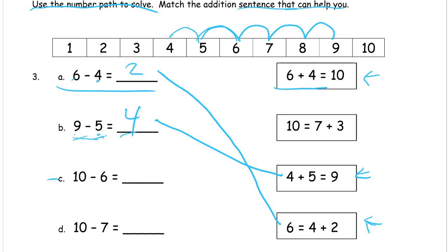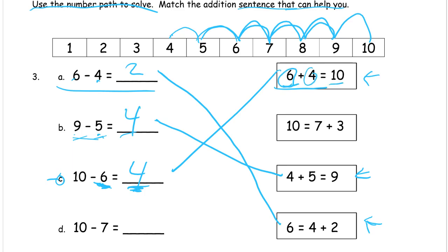Ten minus six: start at the six and go up one, two, three, four — it's four more. And if you know your parts of ten, you can see that if six is one part, four has to be the other. So we know which addition sentence this matches. If these are the two parts of ten, take one part away and you have the other left; add the two parts together and you get ten back. And for the last one — ten minus seven — seven, eight, nine, ten: they're three apart. Seven and three make ten.